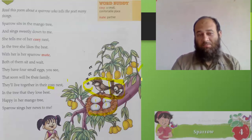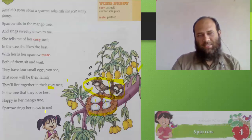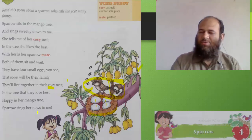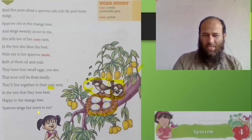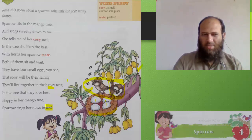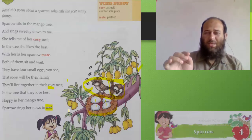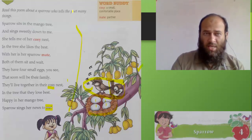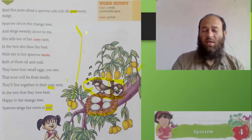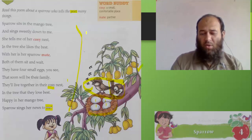Happy in her mango tree, sparrow sings her news to me. And who is 'me' here? It is the poet — the person who has written this poem for you. It's called a poet.